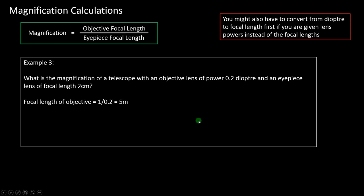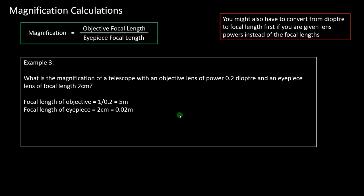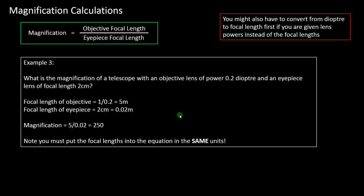First, convert the power in diopters for the objective lens into a focal length: one divided by 0.2 diopters gives 5 meters. The important thing to be careful about is that the eyepiece focal length is given in centimeters. Whenever you put focal lengths into the magnification equation, they must be in the same units — if one is in meters, the other must also be in meters. So the magnification is 5 divided by 0.02, which equals 250.